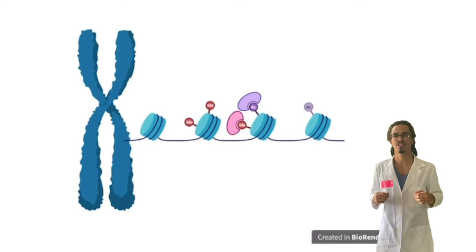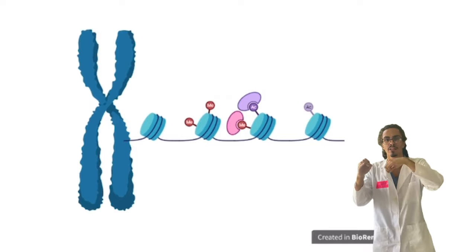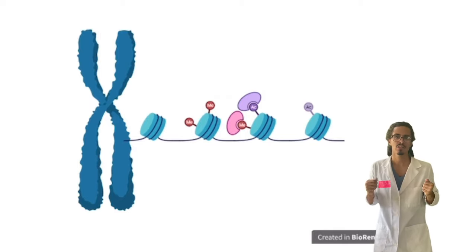Let's look at an example of epigenetics. If you take a chromosome and you start to unravel it, you'll see these ball-like structures wrapped around DNA, kind of like beads on a necklace. These are known as nucleosomes.